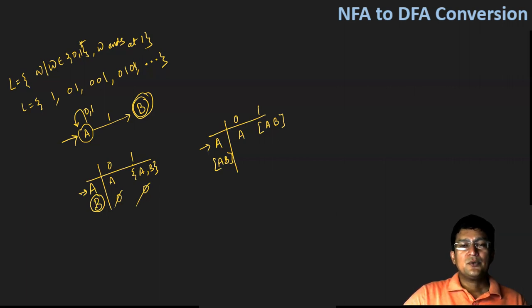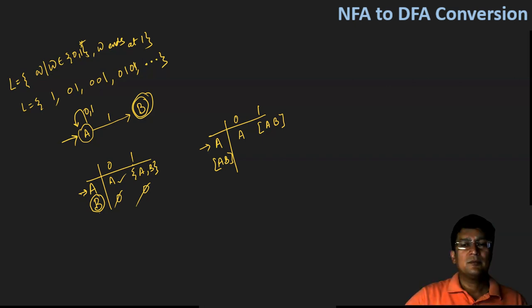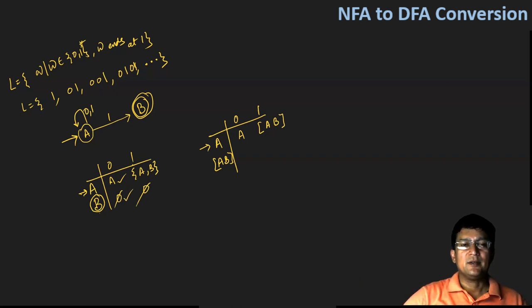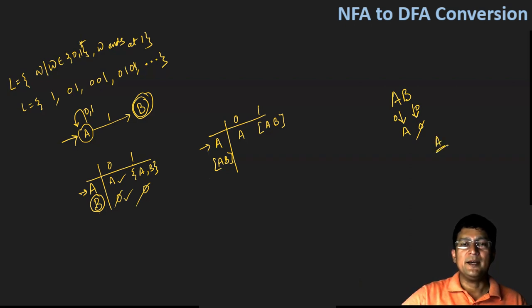So now from state AB with symbol zero: I'll refer to the NFA table. From state A with zero, I go to state number A. From state B with zero, it goes to phi — it does not go anywhere. So what we have to do is we are seeing the transition for the AB state. I've got the transition for A, and I've got the transition for B on symbol zero. With A I got A, with B I got phi. We just take the union of these two, so the union will be A. So I will go to state number A from AB on symbol zero.